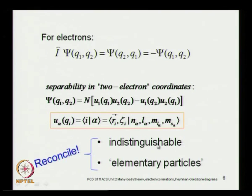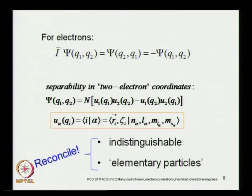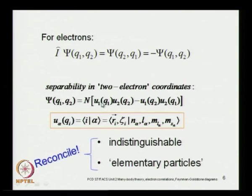You have to reconcile two attributes that can appear contradictory. The particles are indistinguishable in the sense that you really cannot separate one from the other, yet you talk of them as individual elementary particles, each with an identity of its own. The elementary particle of nature is the electron, not the pair. The two-electron wave function is written as a product of one-electron functions, which respects the elementary nature. It is a superposition: electron at q₁ in quantum state 1 and electron at q₂ in quantum state 2, and the other possibility where the electron at q₁ is in state 2 and the electron at q₂ is in state 1.